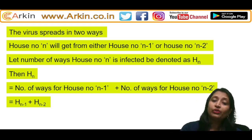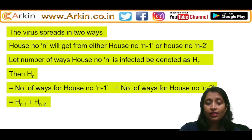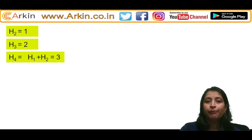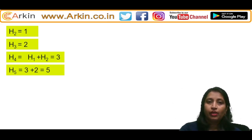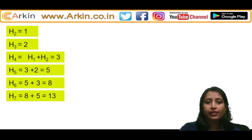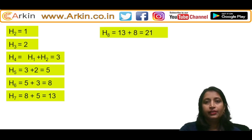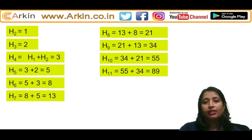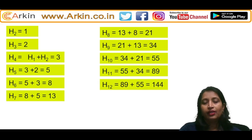If you remember, this is also the Fibonacci series. If h(2) = 1 and h(3) = 2, then h(4) = h(3) + h(2) = 3, h(5) = 3 + 2 = 5, h(6) = 5 + 3 = 8, h(7) = 8 + 5 = 13, h(8) = 13 + 8 = 21, h(9) = 21 + 13 = 34, h(10) = 34 + 21 = 55.